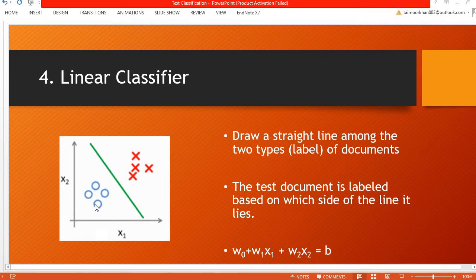These are the instances belonging to the circle class and these are the instances belonging to the cross class. This line gives the best separation between these two different types of data acquired from the training data. Once this line is drawn, the training data is removed and any unseen document can be evaluated based on which side of the line it falls.